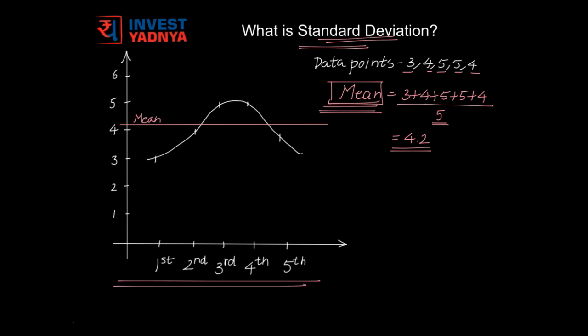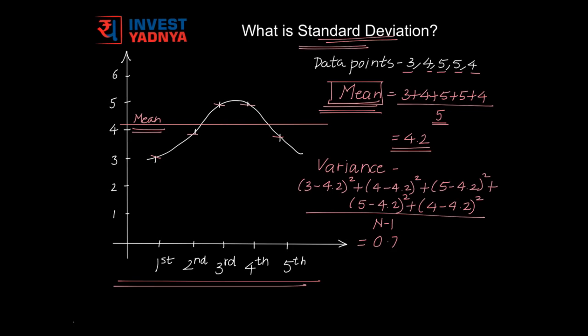And quality of the average means how closely are the data points related to the mean. To calculate Standard Deviation, first we need Variance. Variance is calculated by subtracting the mean from each data point, squaring it, adding all these values, and then dividing it by the number of data points minus 1, which gives a value of 0.7 in this case.